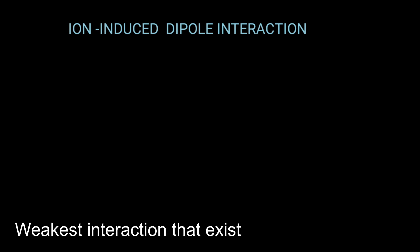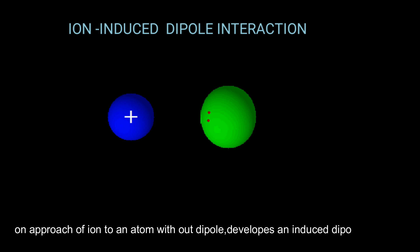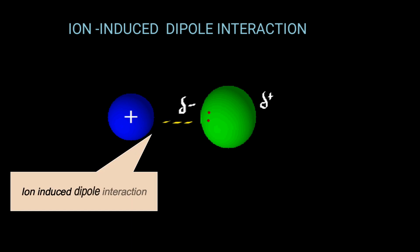The next interaction is ion-induced dipole interaction. This is one of the weakest interactions that exists. It occurs when an ion approaches an atom without any dipole — on approach of the ion, an induced dipole is created. The positive charged ion attracts the electrons to one side of the atom, which causes an ion-induced dipole interaction.